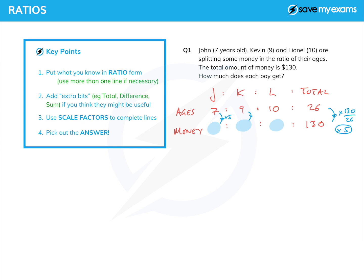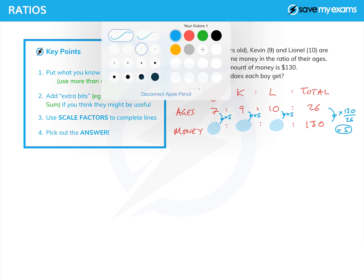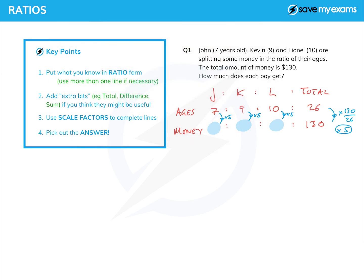So we're going to use 5 as our scale factor, and so all we do is we multiply each of these things by 5. That will give us the answers we want: 7 fives are 35, 9 fives are 45, and 10 fives are 50. So we can say John gets $35, Kevin gets $45, and Lionel, the eldest of the three, gets $50, and we're done.